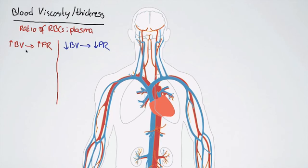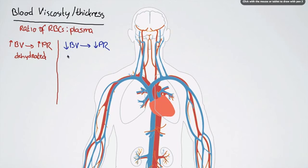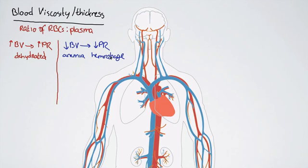What's an example of a way we can increase blood viscosity? If we are dehydrated, that's going to reduce the amount of fluid in the blood, so the plasma is going to be less, and that's going to cause an increased ratio of red blood cells to plasma — an increase in blood viscosity, causing an increase in peripheral resistance. What can cause a decrease in blood viscosity? Loss of blood volume due to anemia or a hemorrhage — that's going to cause a decrease in blood viscosity and a decrease in peripheral resistance.